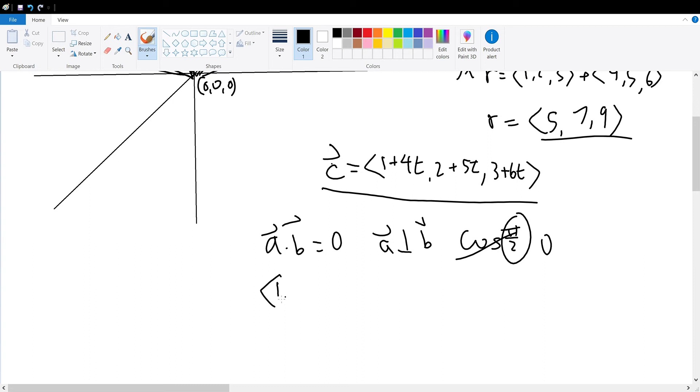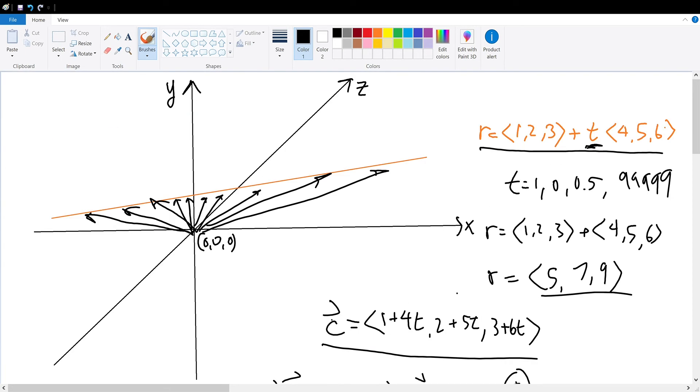So, we have one of the vectors down, which is 1 plus 4t, 2 plus 5t, and 3 plus 6t. Treat this as a definite vector, as this vector definitely exists, the closest vector, which passes through the closest point from the origin. Dot product with another vector. But, what is this vector? Well, this vector has to be a vector that's parallel to our orange line, as only then can the two dot products be 0.